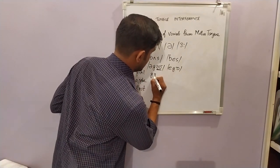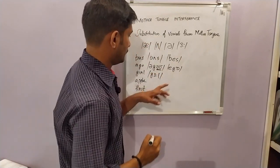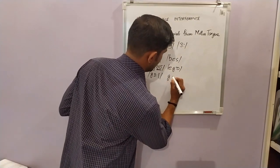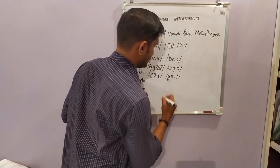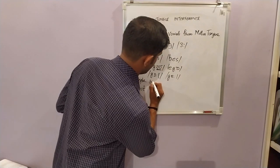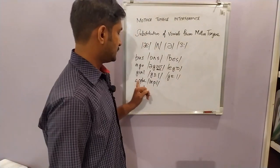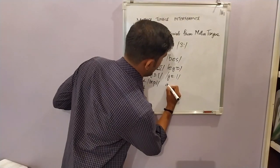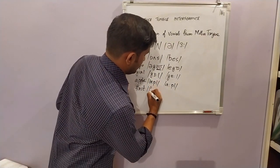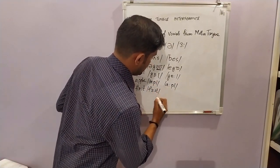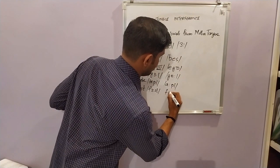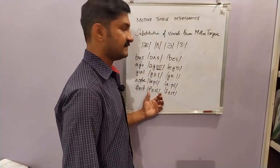Coming to 'girl' — this is the long form of this sound. Indian learners have a tendency to pronounce it as 'girl'. This one is 'apple' — the 'a' sound. We tend to mispronounce this word as 'apple' — it is not 'apple', it is 'apple'. The next word is 'first' — the 'er' sound. Indian learners tend to pronounce it as 'first', not 'first', it is 'first'.